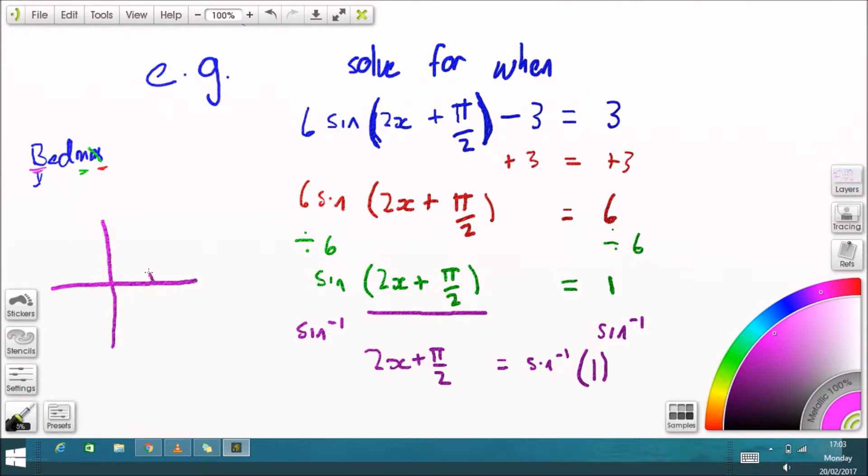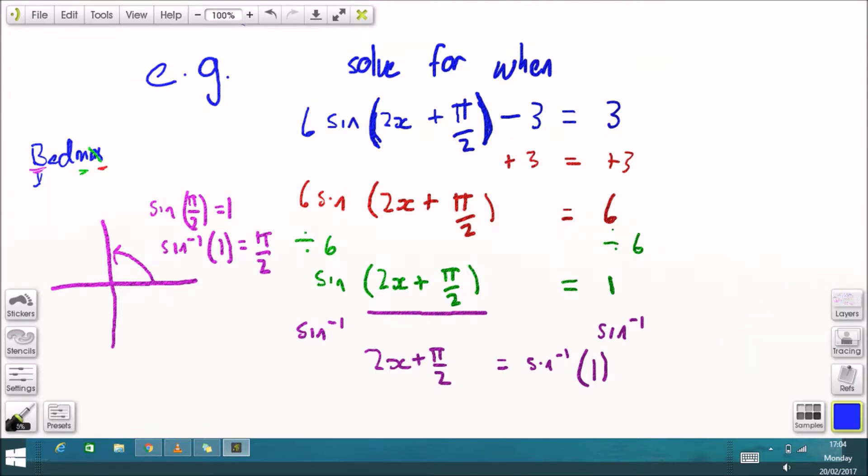Now if you don't know this, that's okay. When is sine of an angle equal to 1? When is the opposite divided by the hypotenuse equal to 1? That's when they're the same, and it's when we're at 90 degrees or pi over 2. So therefore sine of pi over 2 equals 1, inverse sine of 1 equals pi over 2. That leaves us with 2x plus pi over 2 equals pi over 2, subtract pi over 2 from both sides, divide by 2, x equals 0.